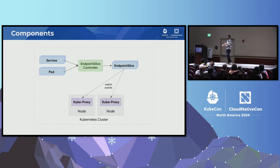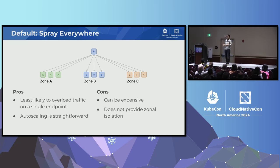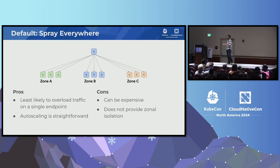Then you have a data plane — usually kube-proxy — on each node that reads those endpoint slices and does some iptables magic to do the routing for you. What we're going to be talking about is different forms of logic in kube-proxy or your Kubernetes data plane of choice. By default, everything just goes everywhere — there's no concept of preferring traffic to stay close to where it originated from. If it's an endpoint behind a service, it's equally likely to go there as opposed to one in a completely different zone.